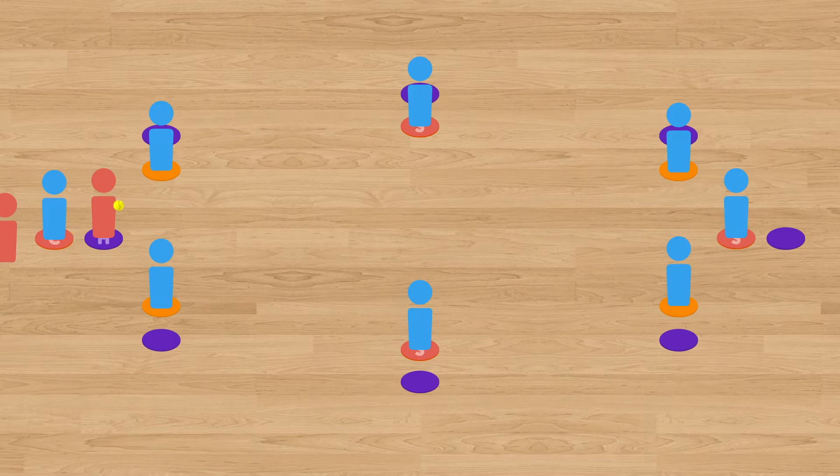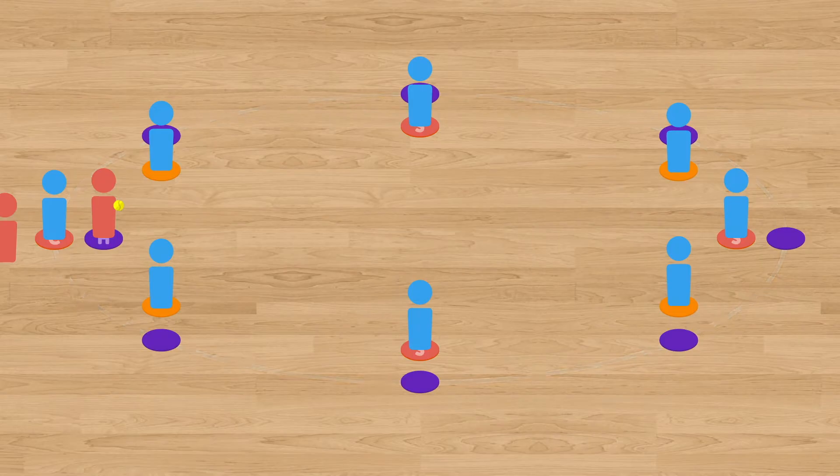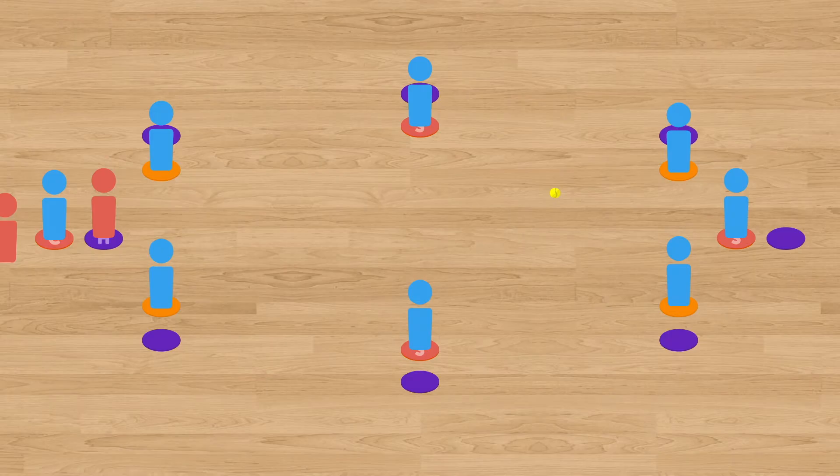The player at home picks up the ball and throws it into play. For the ball to be considered in play, it has to land within the playing area, that means inside the circle of bases. As soon as they've thrown the ball, they begin to make their way around the bases.